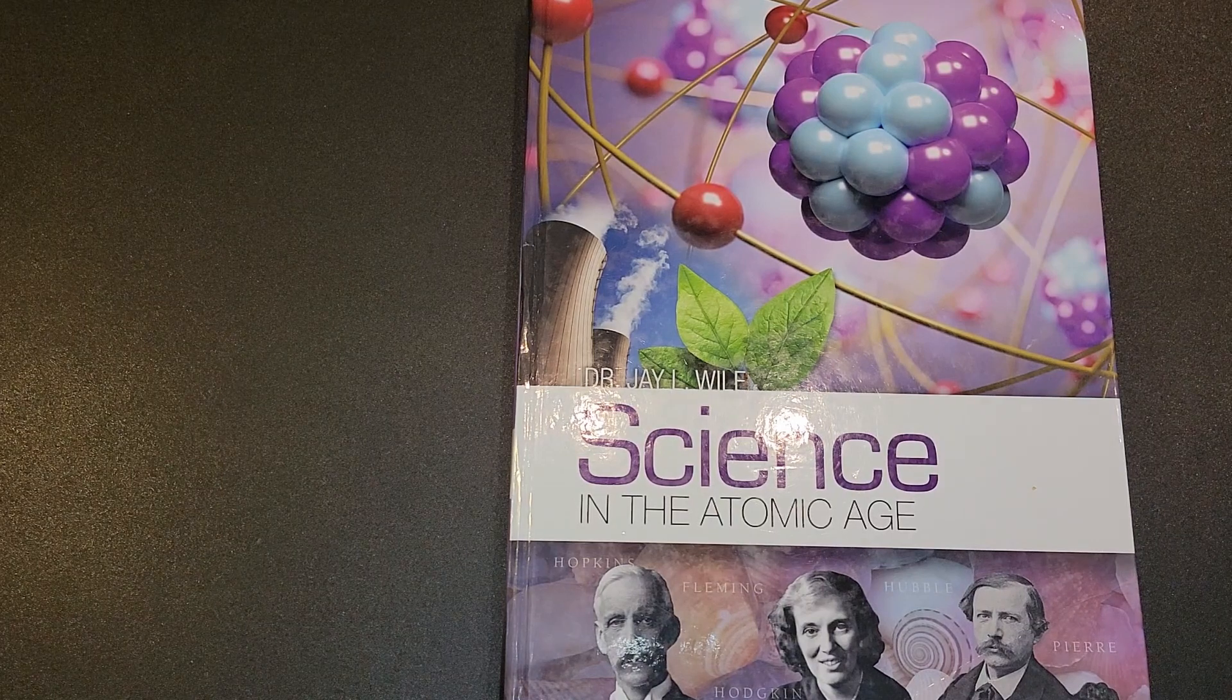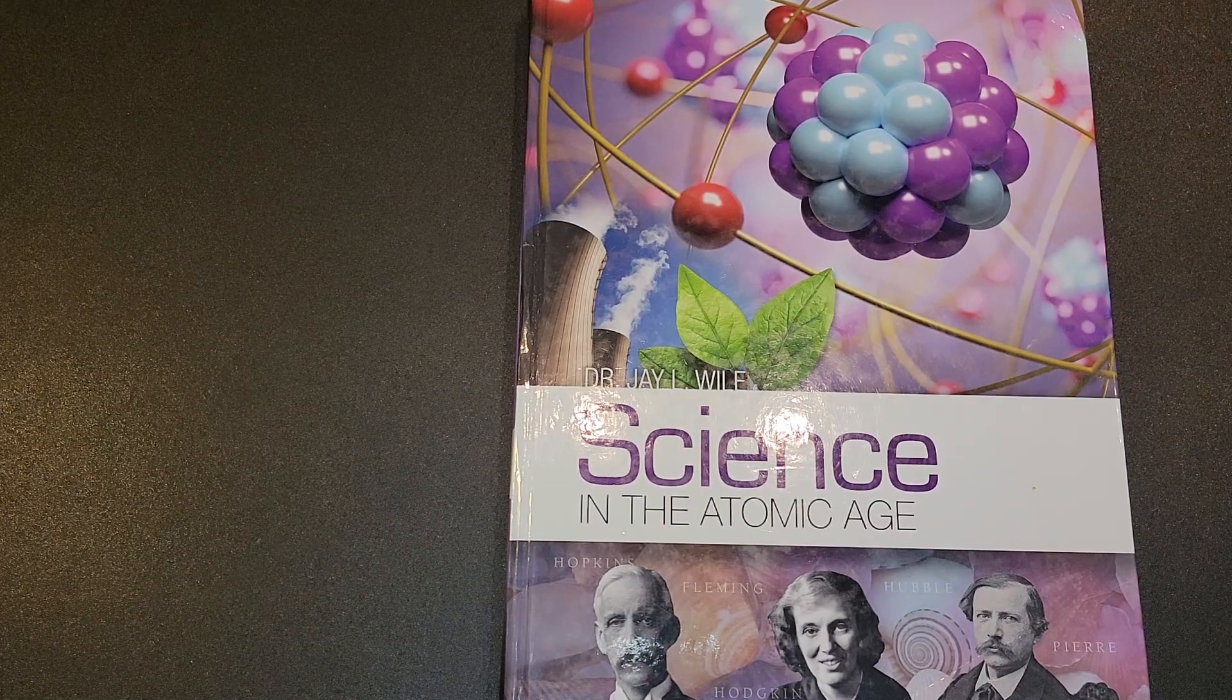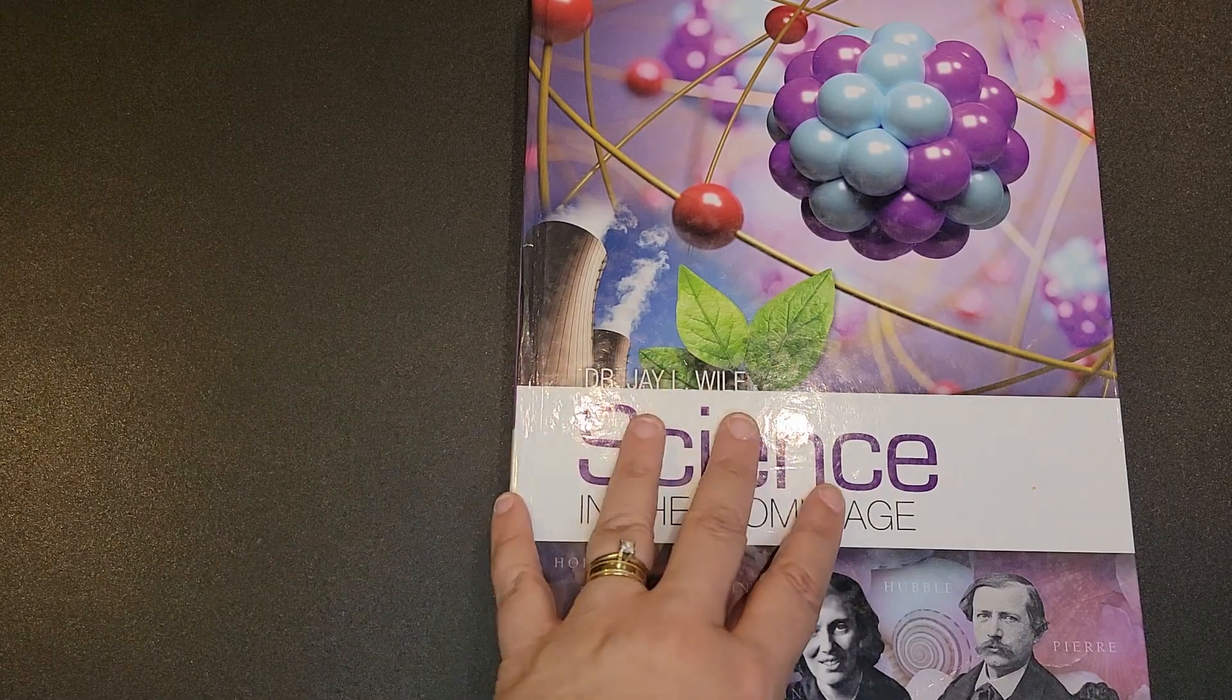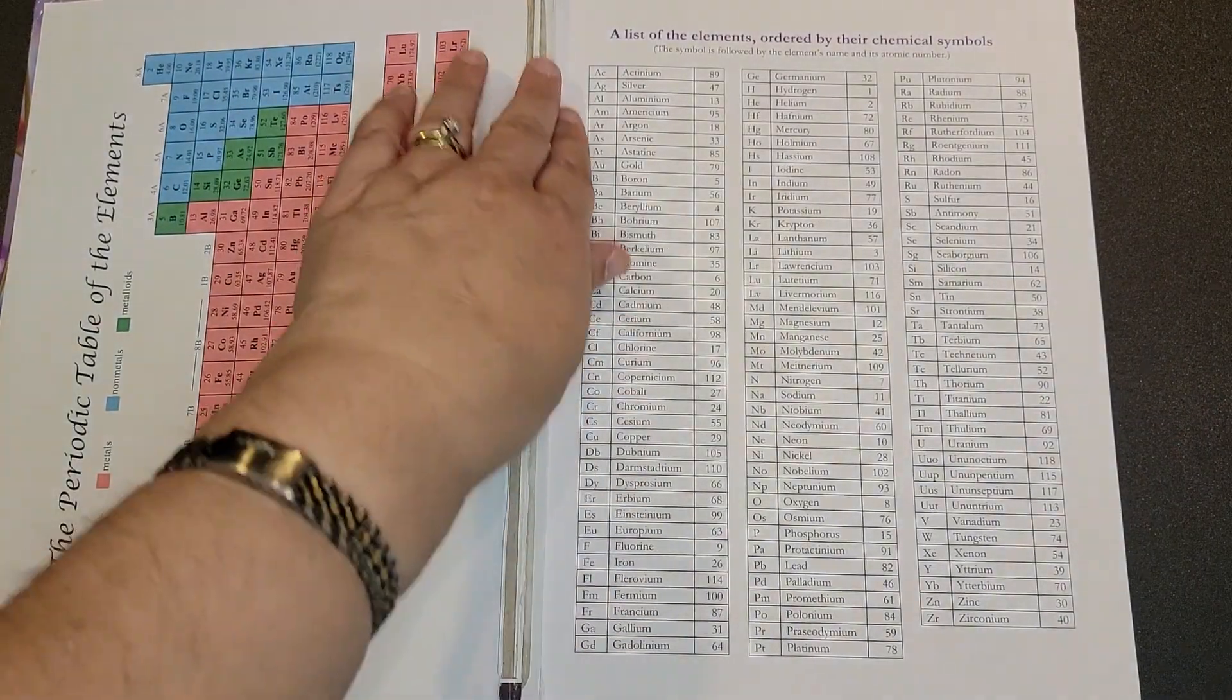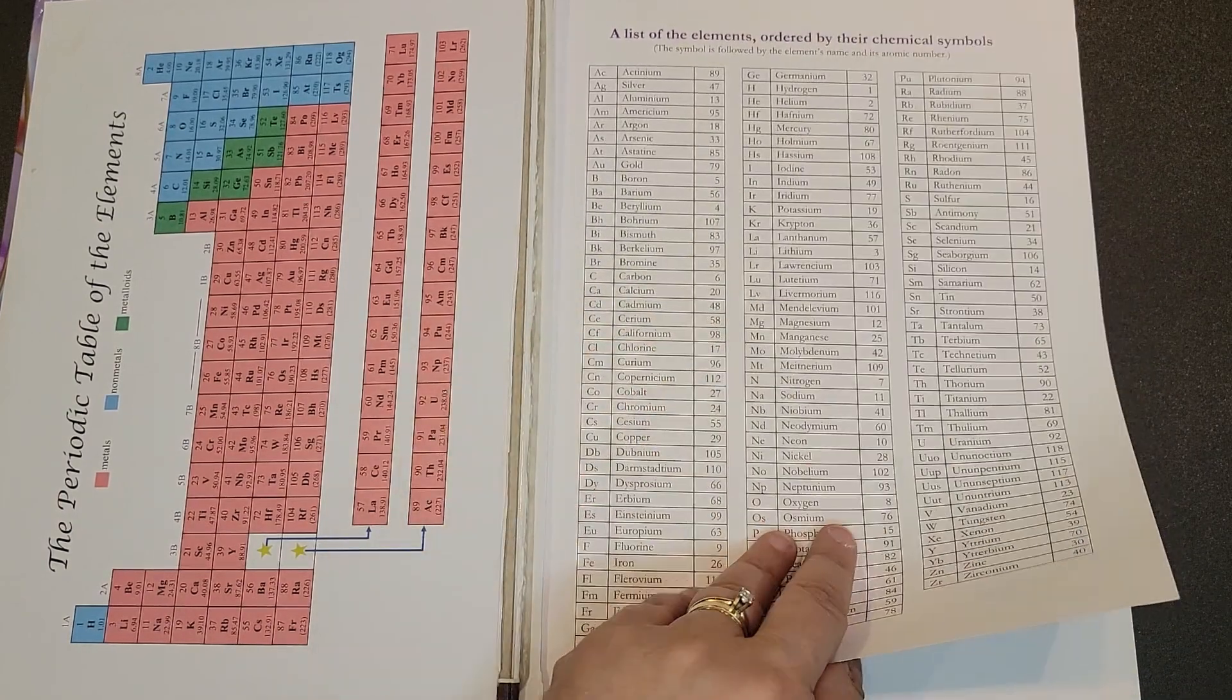Today I want to do a flip through of Science in the Atomic Age. This textbook is $69 new. I did purchase mine used off of eBay, and so you can see that it has been used.